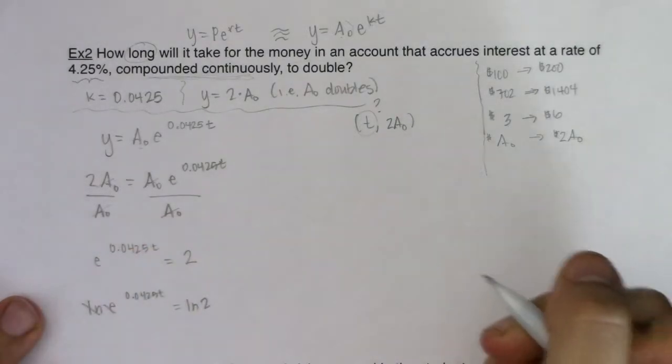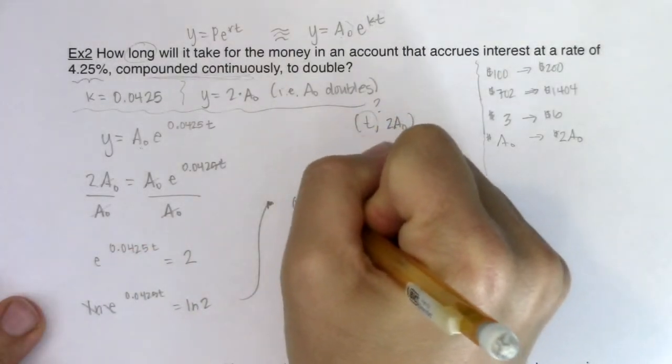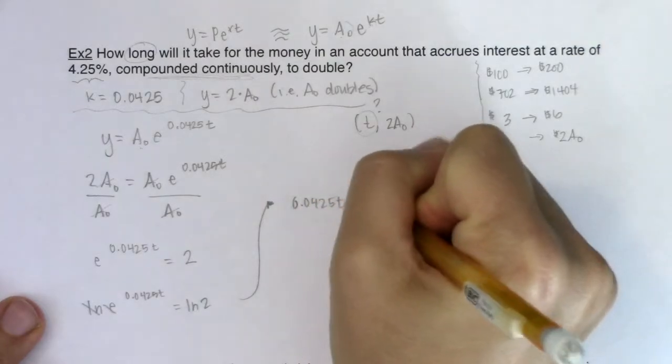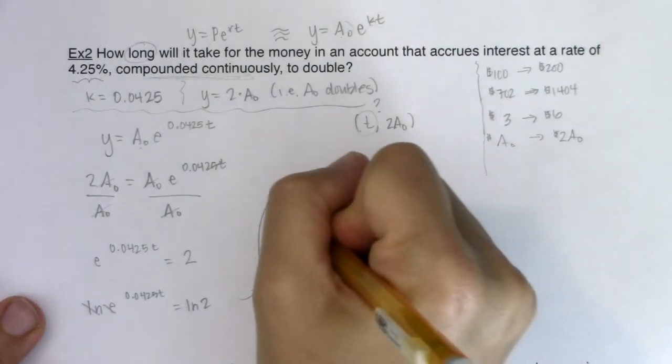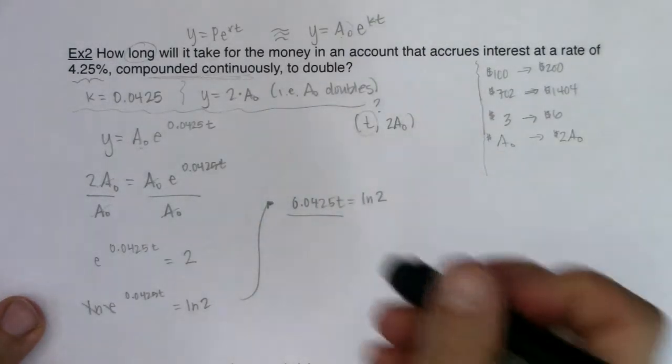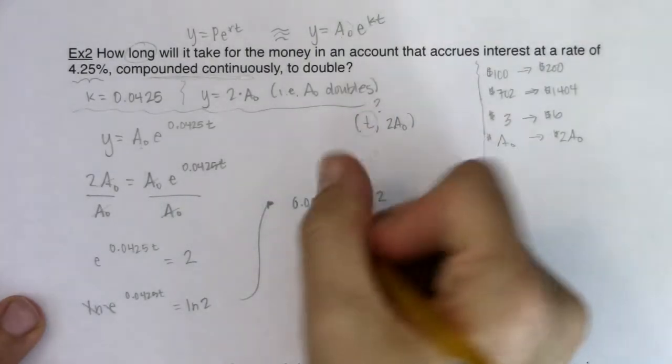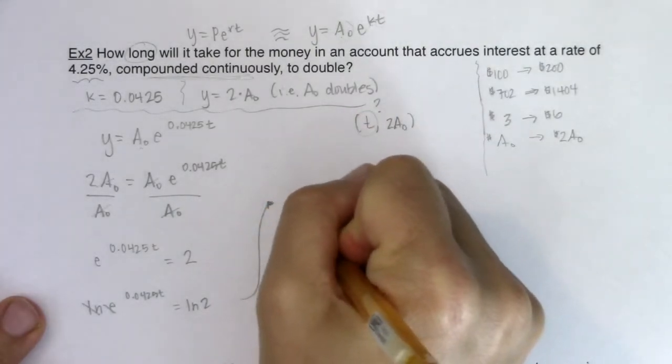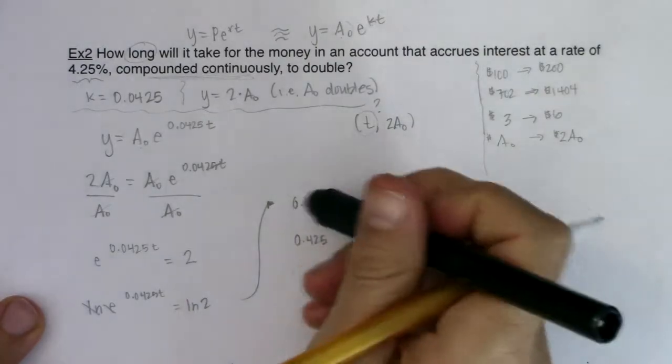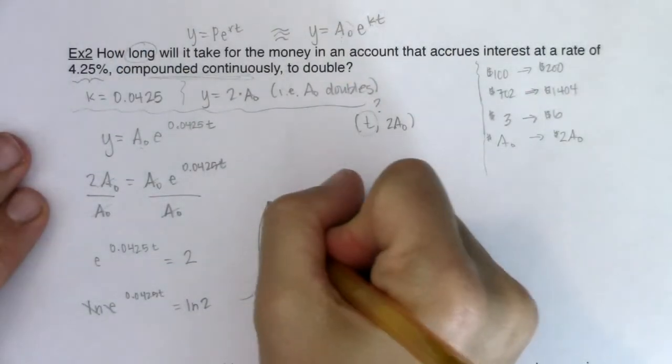The natural log and the E, they cancel out. So as I start to manipulate this, I've got 0.0425T equaling natural log of two. And if I want to solve for T, all I need to do now, I'll just write that in one extra step so that we can see it. I'm going to divide both sides. Oh gosh, I really can't write this morning. I'm going to divide both sides by 0.0425.